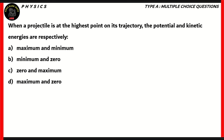Next question. When a projectile is at the highest point on its trajectory, the potential and kinetic energies are respectively: maximum and minimum, minimum and zero, zero and maximum, or maximum and zero?